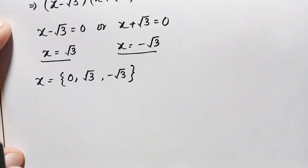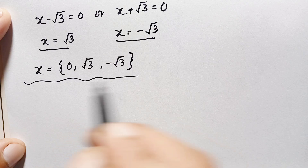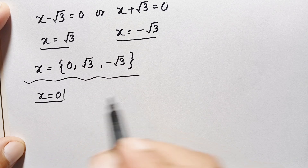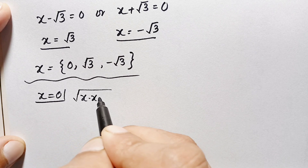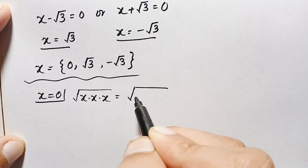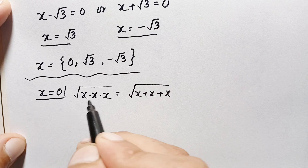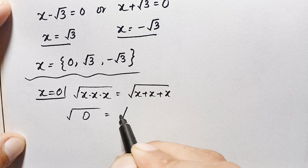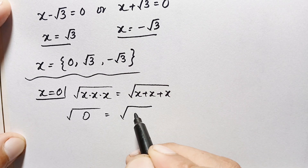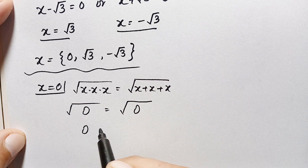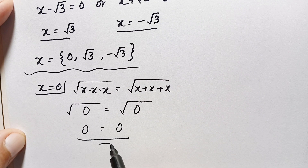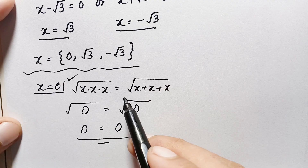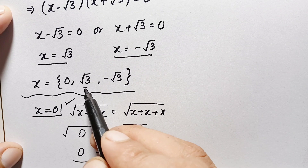First we verify x equals 0. Our problem is √(x·x·x) = √(x+x+x). Substituting x = 0, the left side becomes √(0·0·0) = √0 = 0, and the right side becomes √(0+0+0) = √0 = 0. Both sides are equal, confirming x = 0 is a valid solution.